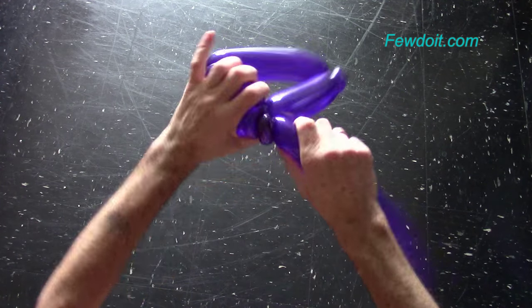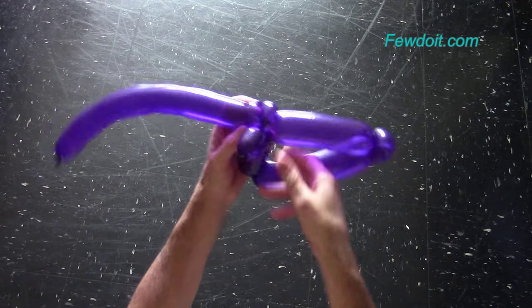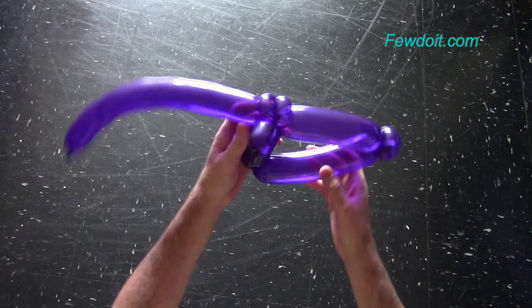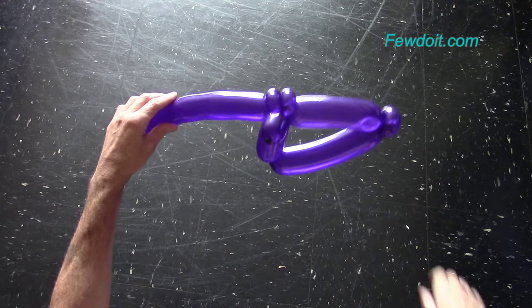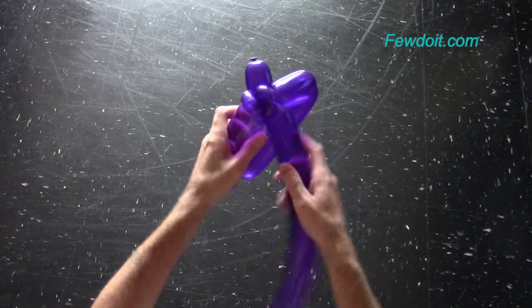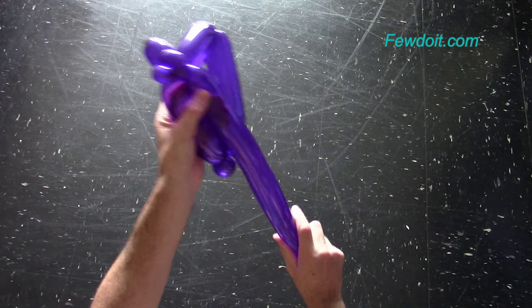The seventh bubble represents the body of the bat. The chain of the fourth, fifth and sixth bubbles represents the wing of the bat. Now we have to make the second wing.